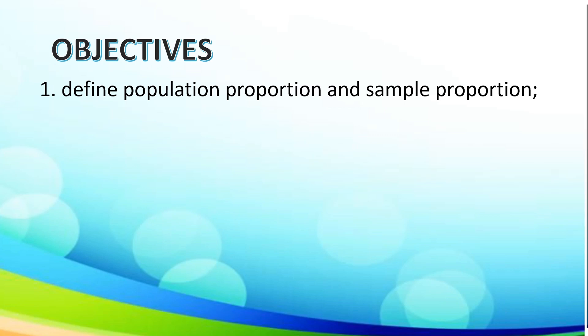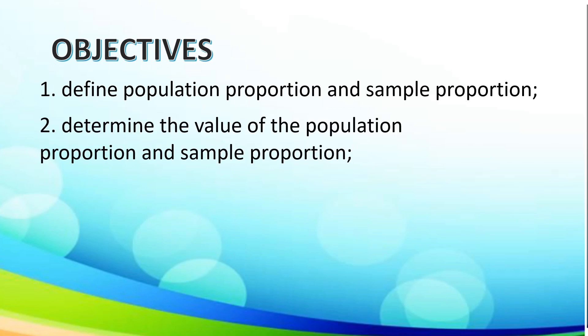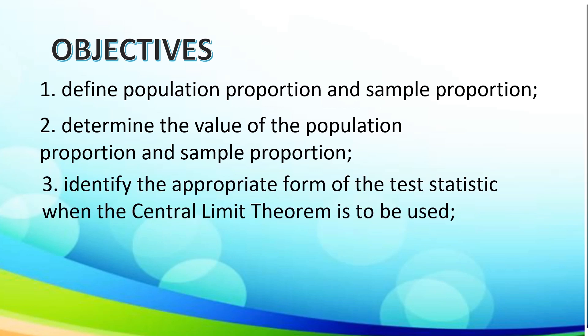To begin with, our objectives are: define population proportion and sample proportion, determine the value of the population proportion and sample proportion, identify the appropriate form of the test statistic when the central limit theorem is to be used, and relate population proportion in real life situations.